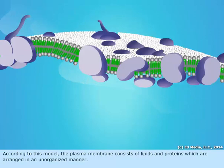According to this model, the plasma membrane consists of lipids and proteins which are arranged in an unorganized manner.